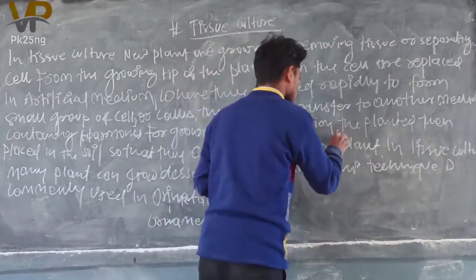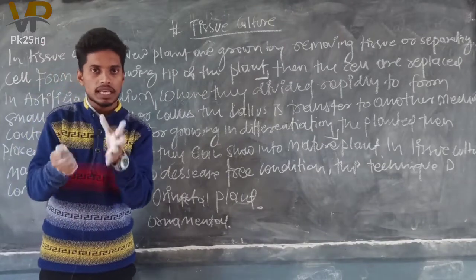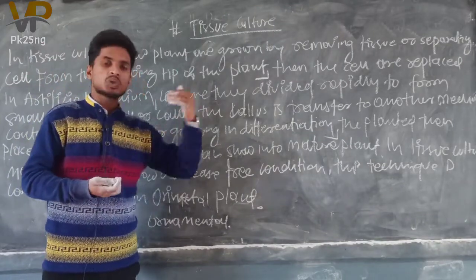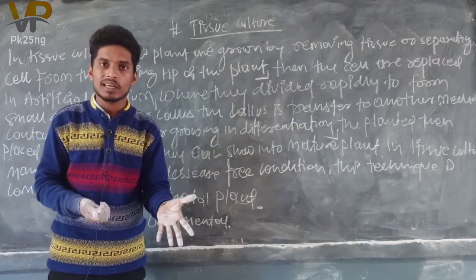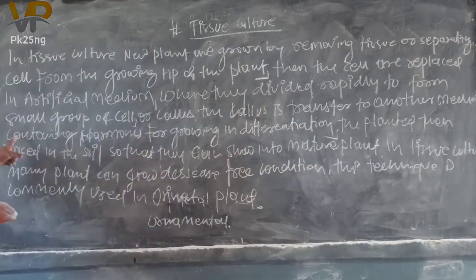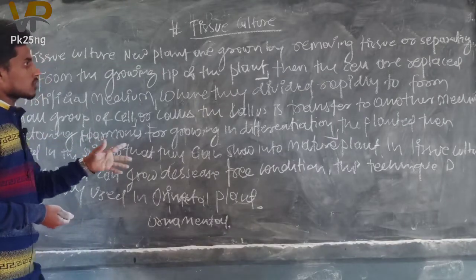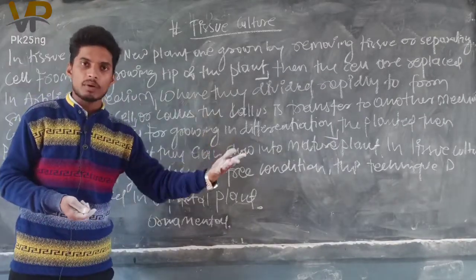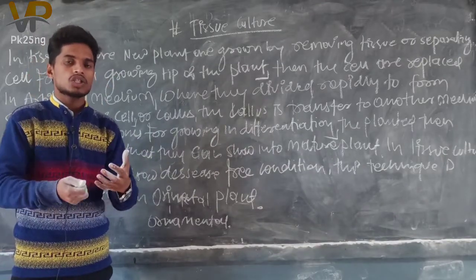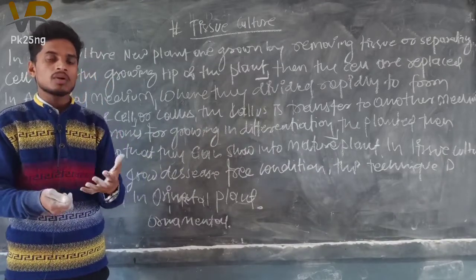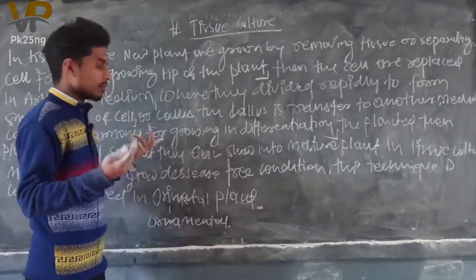The callous, which is the small group of cells, is placed in another artificial medium containing hormones so that it can develop well. This medium provides the necessary hormones, and they form a small plant. The hormones in this medium help the small plant to develop properly.